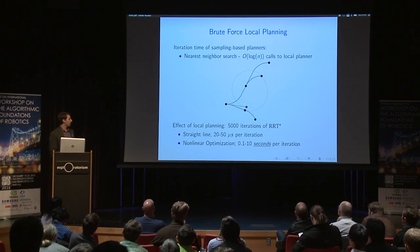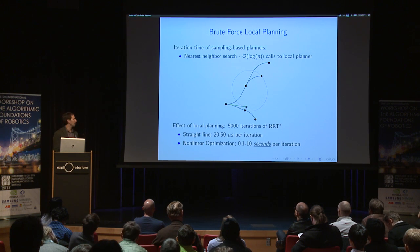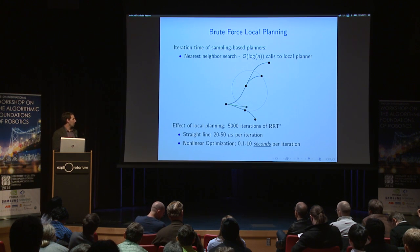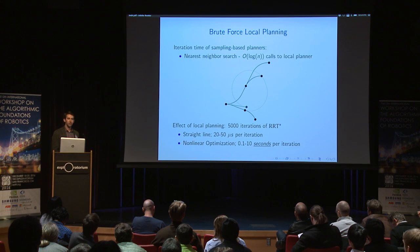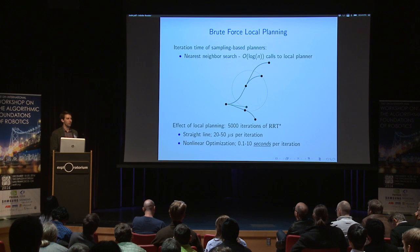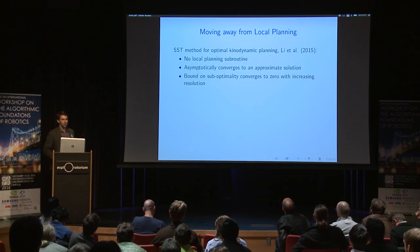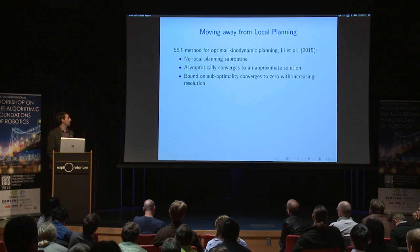Just to give a sense of how the local planning subroutine can affect the running time of an algorithm like RRT*, with straight line planning you can get iteration times for the first few thousand iterations on the order of microseconds or tens of microseconds. If you have to do something more computationally intensive, like a nonlinear optimization, you can quickly run into iteration times taking seconds. This motivates moving away from algorithms that require this local planning subroutine.